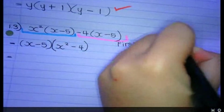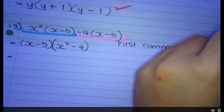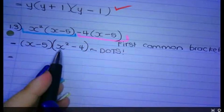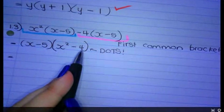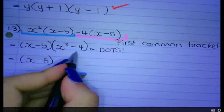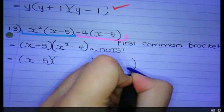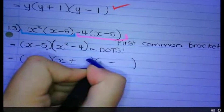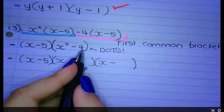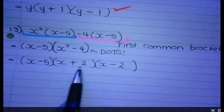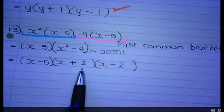First, common brackets. Then DOTS. Always run through the checklist: two terms, a minus between them, square number, even exponents — so we can do DOTS. Leave the first bracket as is. The second bracket, because it's DOTS, splits into 2: plus, minus. Because it's x squared, we go x, x. The square root of 4 is 2 and 2. Now we can't go any further, so that is your final answer.